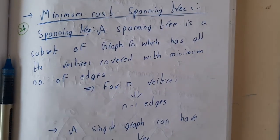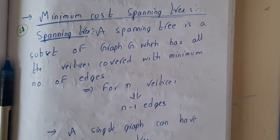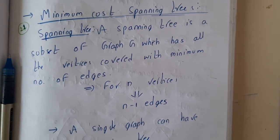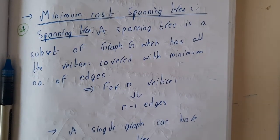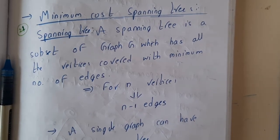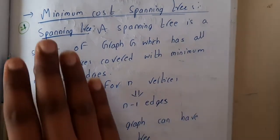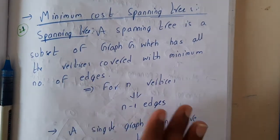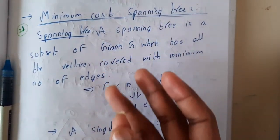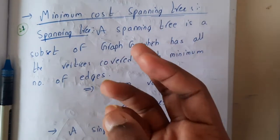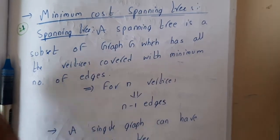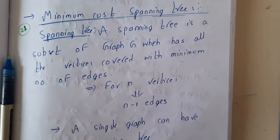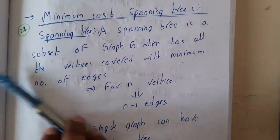Hello guys, we are back with our next lecture. In this lecture let us go through spanning trees. We need to know what is a minimum cost spanning tree because in our next lecture we'll be discussing Prim's and Kruskal's algorithm. The introduction to trees we have done in our first unit, in subjects like discrete mathematics and data structures, so you can check there for the basics.